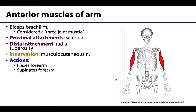We're getting into compartments now. We will have an anterior and a posterior muscle compartment of the arm. Most of the time when we're talking about the upper limb, anterior compartments can be thought of as predominantly flexors — in this case, flexing the elbow joint — whereas the posterior compartment of the arm is associated with extension of the elbow joint.